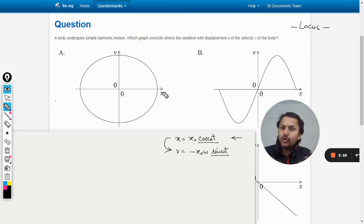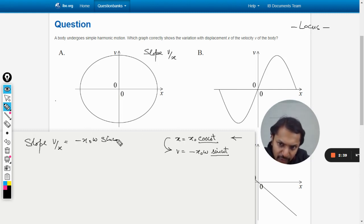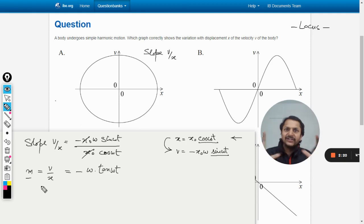We can now find the slope of the graph instantaneously and we can find in which quadrant what could be the slope. For this, the slope will be given by the ratio V by X because V is Y and X is X. So let us create the function of slope: V by X equals minus X naught omega sine omega t divided by X naught cos omega t. X naught gets cancelled out, it comes out to be negative omega tangent omega t.